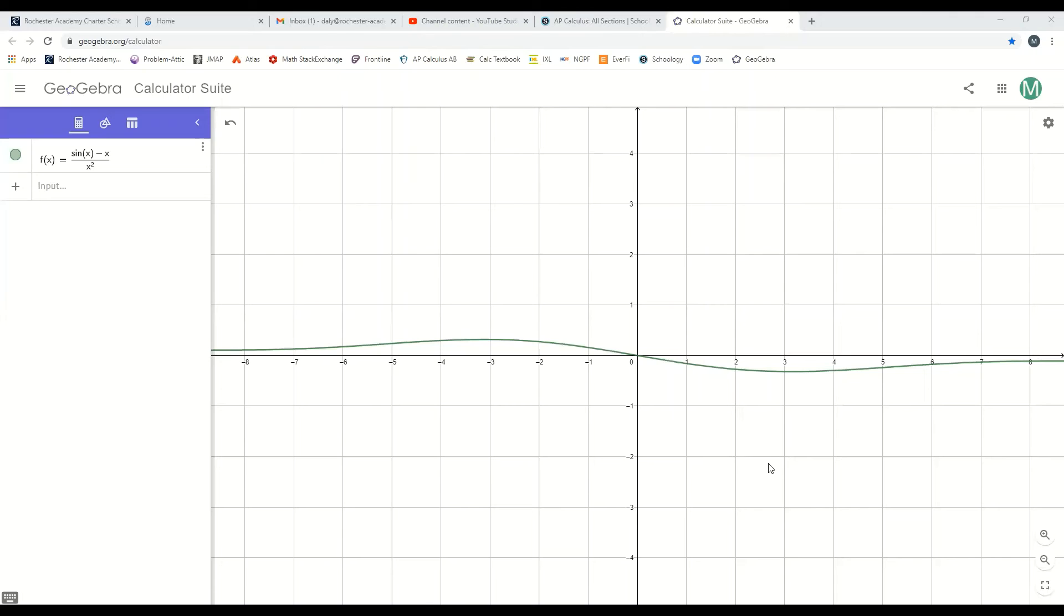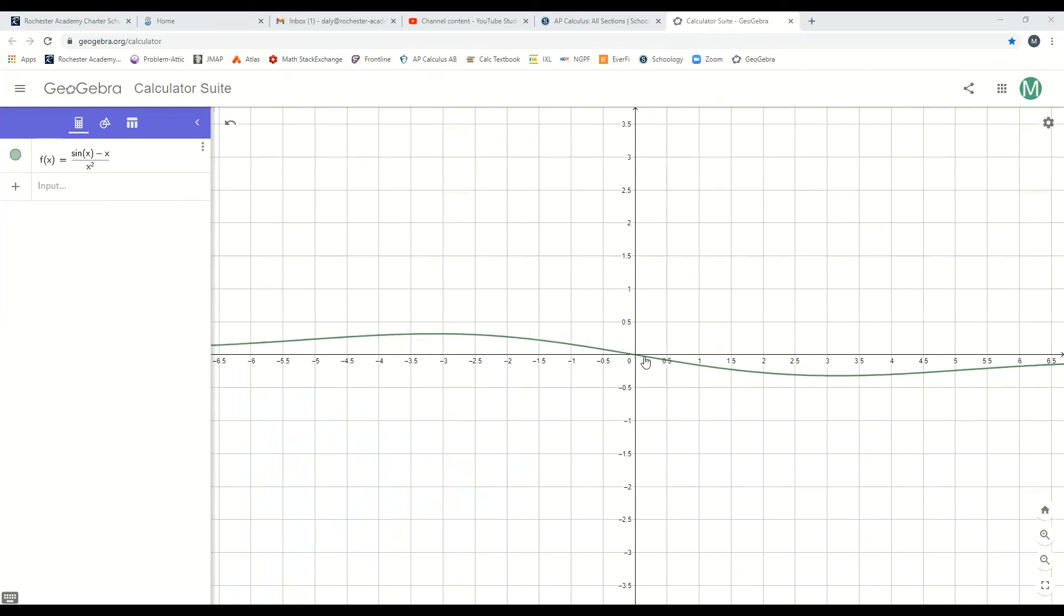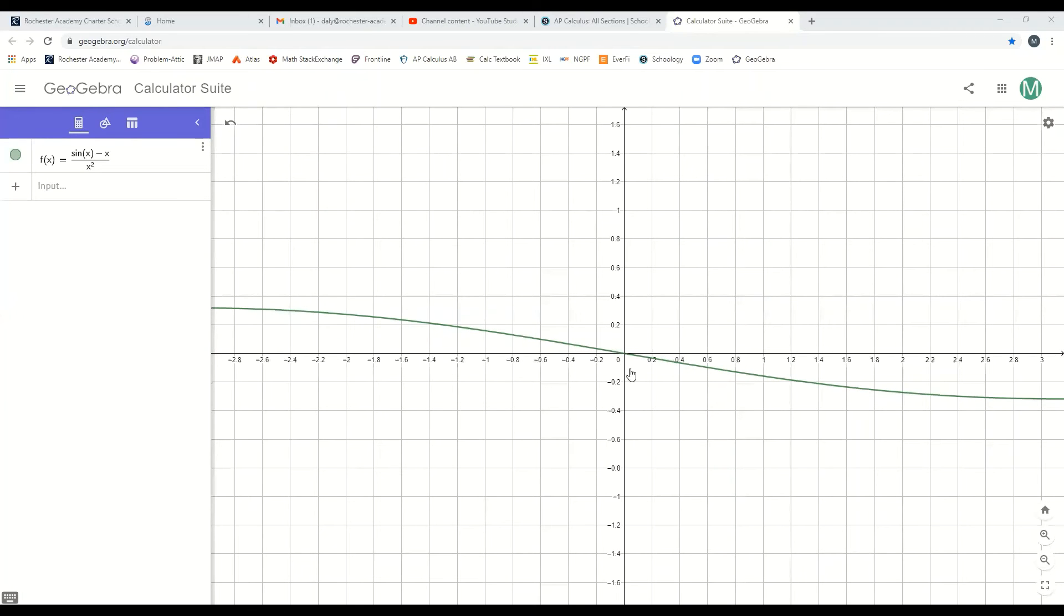Let's take a quick look at GeoGebra just to double check our work. All right. So here is the graph of sine of x minus x over x squared. And we can see that the limit as x approaches zero is zero, just like L'Hopital's rule applied twice told us it would be.